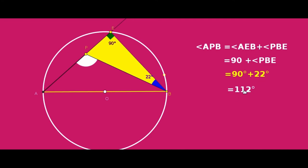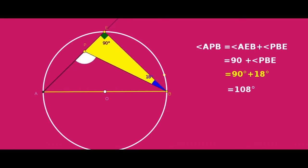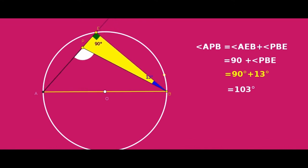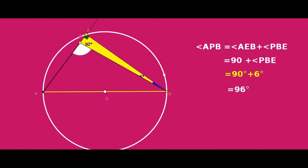So we get that angle APB is greater than 90 degrees. At any point on the circle, the angle is exactly 90 degrees. For a point inside the circle, the angle is greater than 90 degrees.